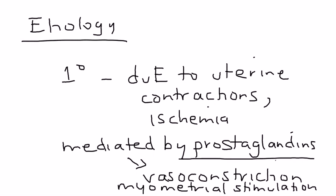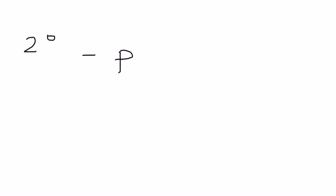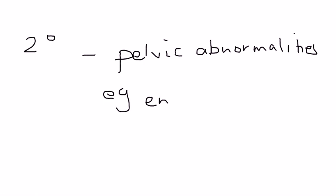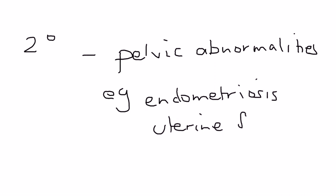So that's a key player in primary dysmenorrhea. Secondary dysmenorrhea is due to pelvic abnormalities. For example, endometriosis is a very common cause, uterine fibroids are a very common gynecologic problem, and quite a long list of others, but these are the main ones.